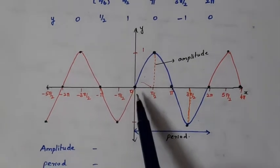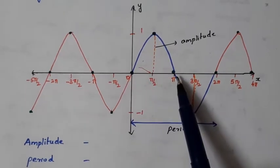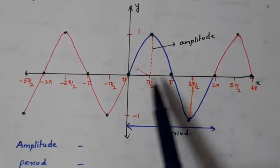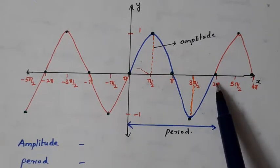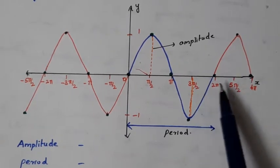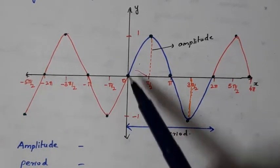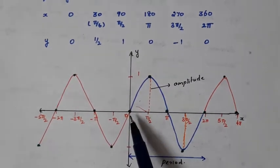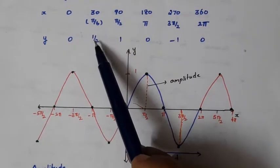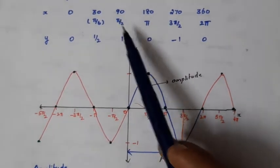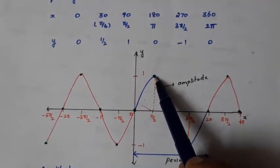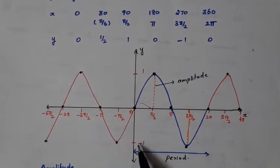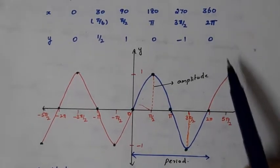Here I have marked the angles in radians along the x axis: 0, π/2, π, 3π/2, 2π, 5π/2, and 4π. The negative values have also been marked, and the range −1 and +1 are marked along the y axis. Plotting the values: (0, 0), then (π/2, 1), then (π, 0), then (3π/2, −1), and (2π, 0).